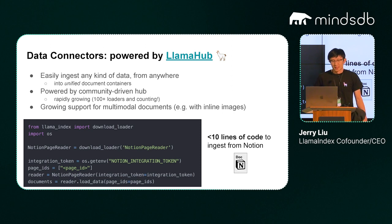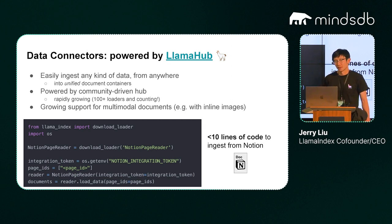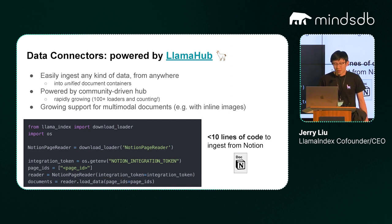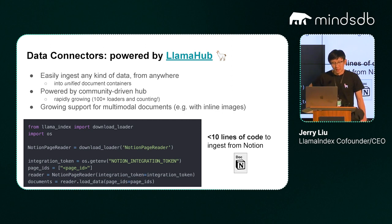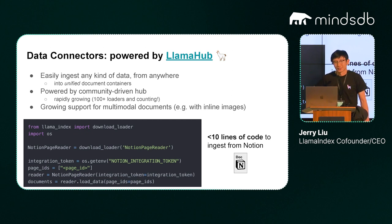The first part is the data connectors powered by LlamaHub. Data connectors are basically the first step of loading data into your LLM application. LlamaHub allows you to ingest any kind of data from a lot of different places. We have 100 different data loaders, powered by a community-driven GitHub repo with a website layer on top. You can load information from diverse data sources — from Notion, Slack, Discord, to files like PDFs and PowerPoints. We have some basic ability to extract info out of a PDF.